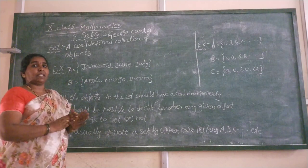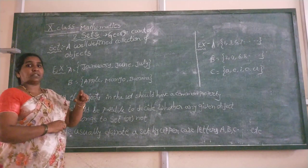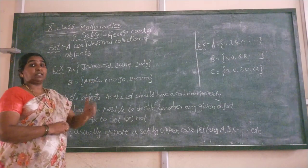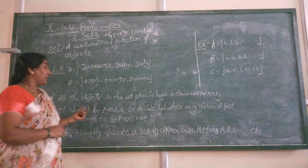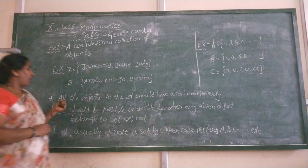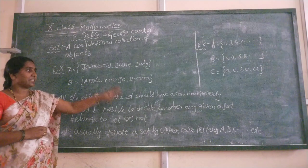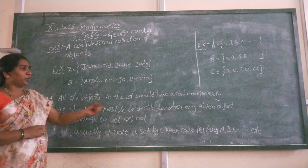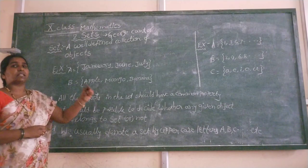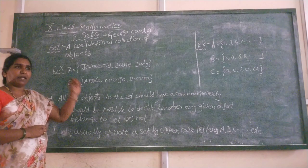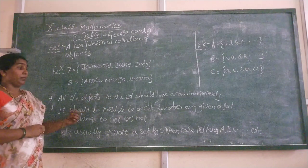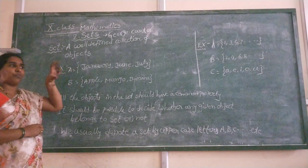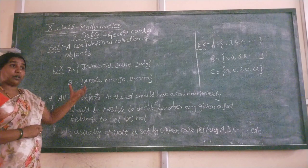We are able to decide each and every element — whether that element belongs to that set or not. That is the meaning of well-defined. All the objects in a set should have a common property, and it should be possible to decide whether a given element belongs to that set or not. That is the meaning of well-defined.